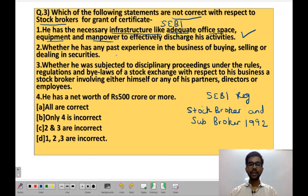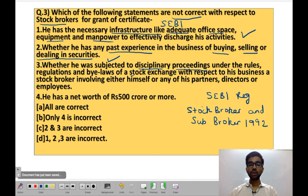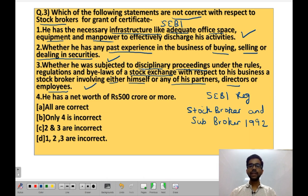Statement 2: SEBI will see whether the applicant has any past experience in the business of buying, selling, or dealing in securities. This statement is also correct — past experience is a required consideration. Statement 3: whether the applicant was subjected to disciplinary proceedings under the rules, regulations, and bylaws of a stock exchange with respect to his business as a stock broker, involving either himself or any of his partners, directors, or employees. This is also correct — SEBI checks past disciplinary records of the applicant, partners, directors, and employees.